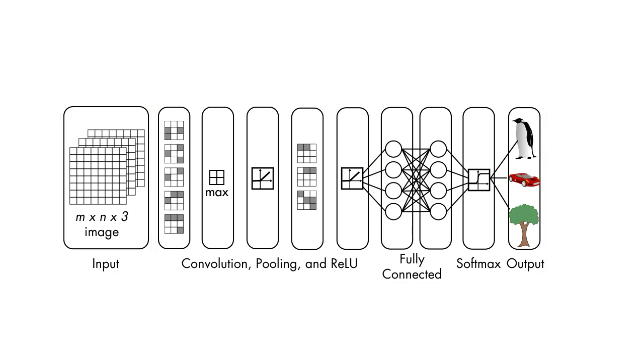So how does the network do this? The architecture of the network—that is, the type, size, and order of the layers—is chosen by the architect. That's you, or whoever else initially designs the network.